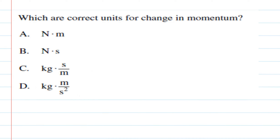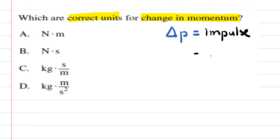The next question asks: which are the correct units for a change in momentum? A change in momentum is denoted delta P, and it is equal to impulse. Impulse equals force times a change in time. Force is measured in newtons and time in seconds, so the units for a change in momentum are newton-seconds, which is option B.